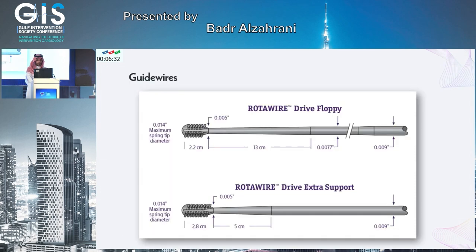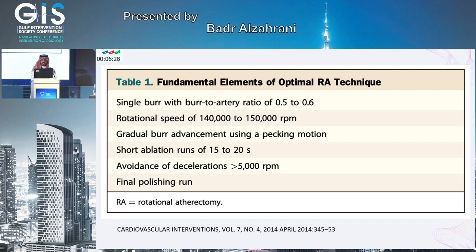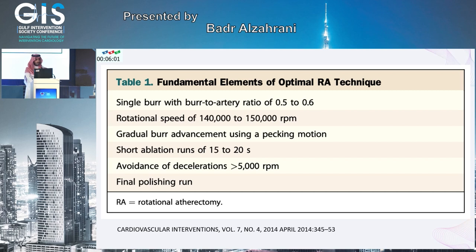The wire has a body of 0.009 inch. For optimal rotational atherectomy technique, use a 0.5 to 0.6 ratio of the vessel size, start at 150k RPMs and go higher if needed, use the pecking motion, and don't exceed 20 seconds per run — otherwise the no-reflow phenomenon increases. Avoid deceleration; if deceleration exceeds 5,000 RPMs, slow down or stop and repeat.